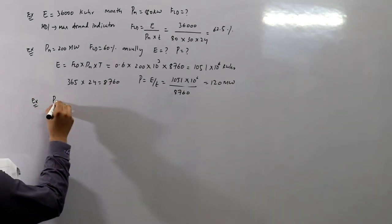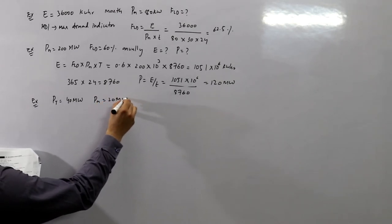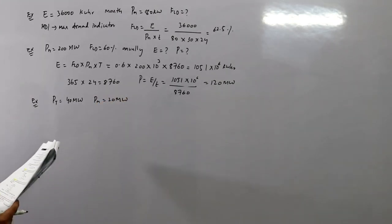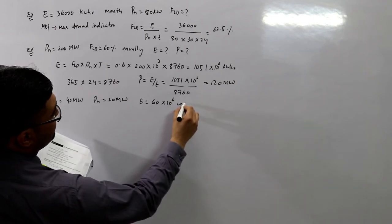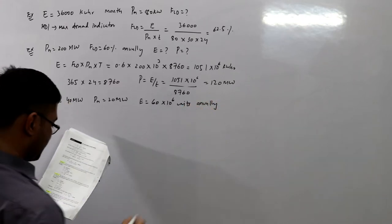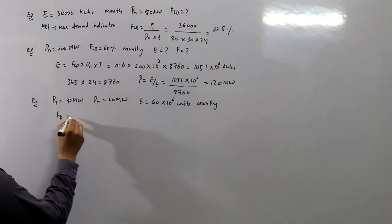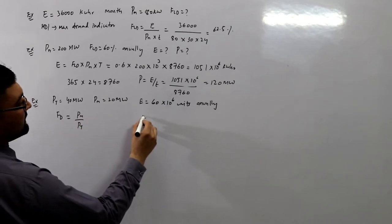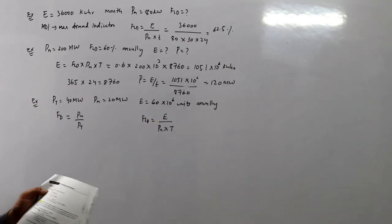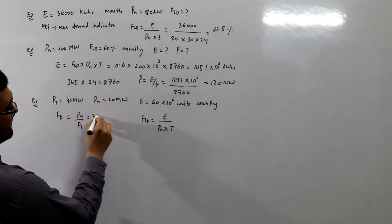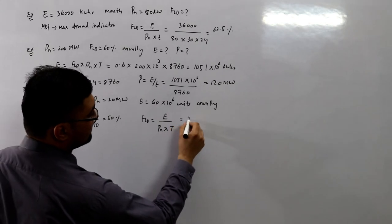A diesel generating station has an installed capacity of 40 megawatts (take as connected load) and a maximum demand of 20 megawatts. Units dispatched are 60 × 10⁶ kilowatt hours annually. The demand factor fd = pm / pt = 20 / 40 = 50 percent. The load factor fld = e / (pm × t) = 60 × 10⁶ / (20,000 × 8760), which comes out to be 34 percent.